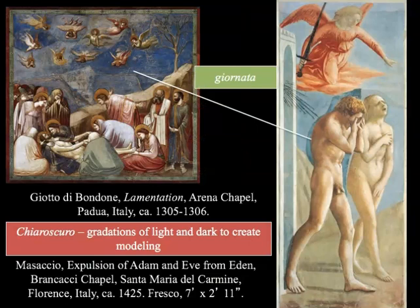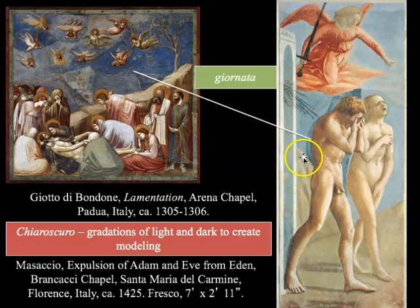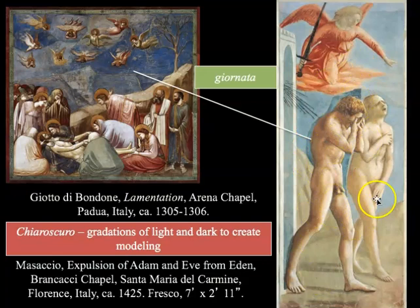This sense of emotion is important — Giotto also uses it in the Lamentation — as well as the use of chiaroscuro, which is the gradations of light and dark to create modeling. You can also see giornata here, both in Masaccio and in Giotto's work. Giornata means a day's work in fresco — each day you would pick a spot and paint it, then come back the next day and paint different spots. You can see that on one day Masaccio didn't quite match up the color as perfectly as he'd have liked, and you see that separation of color.